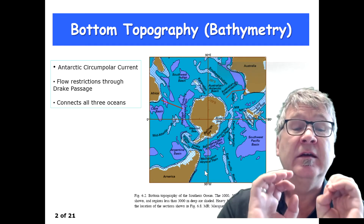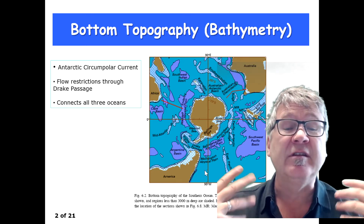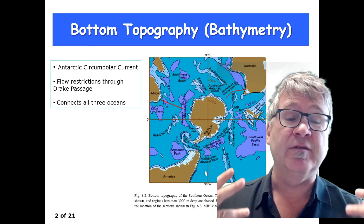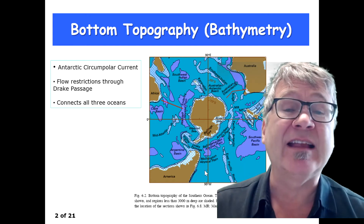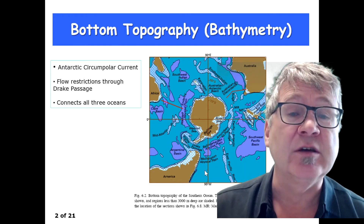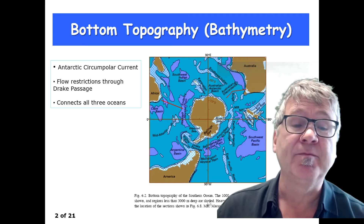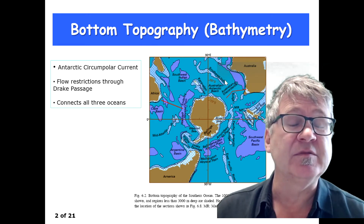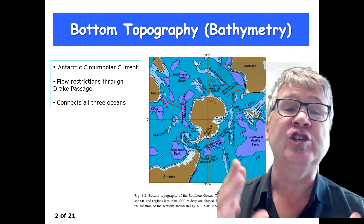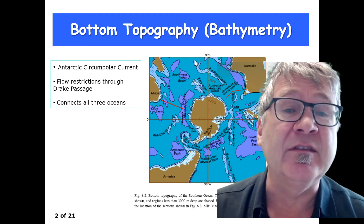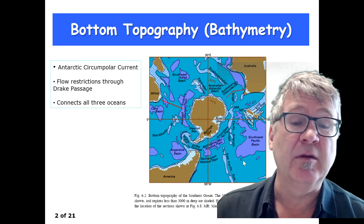Going back to the depth distribution that you can see here: apart from the deep basin, you can also see the areas which are between 3 and 5,000 meters deep. And then the big contrast are the so-called ridges, ridge systems, which are less than 3,000 meters deep. What these ridge systems do is limit the exchange of water which is deeper than the ridge.